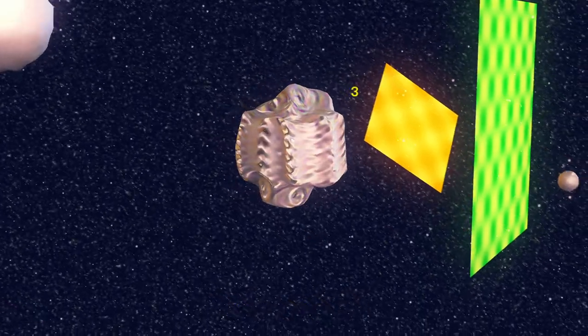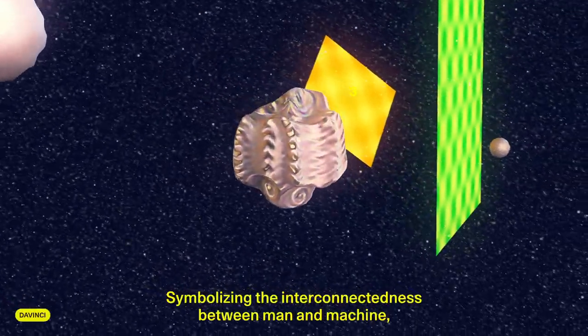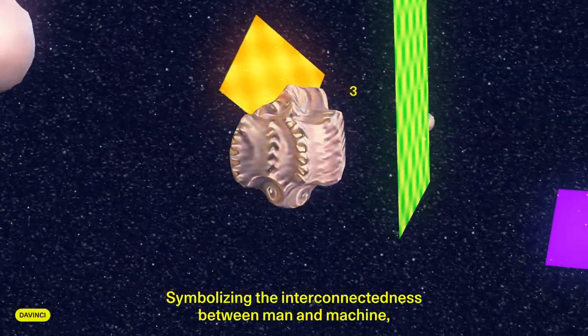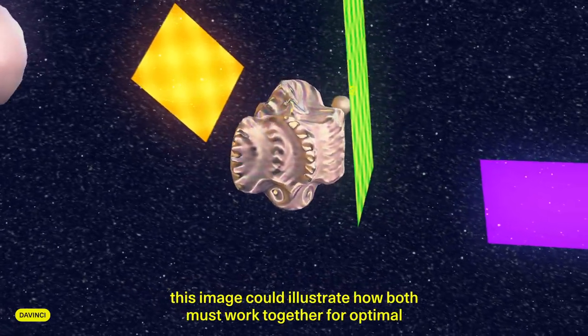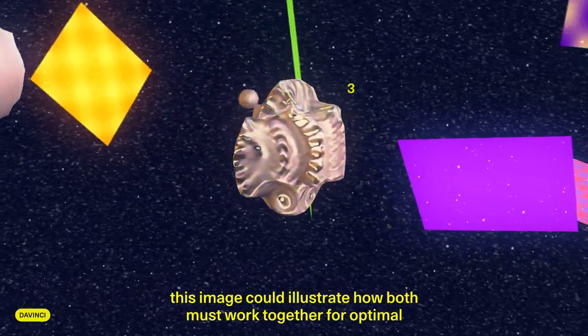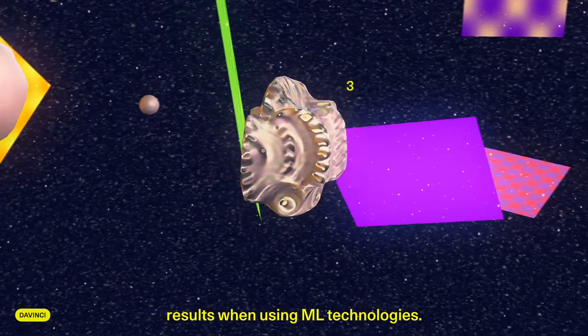With a set of gears. Why? Symbolizing the interconnectedness between man and machine, this image could illustrate how both must work together for optimal results when using ML technologies.